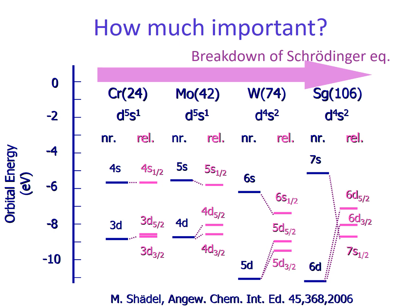Then how much important the relativistic effect in chemistry? This picture is an example showing the energy of d and s orbital of group six elements: chromium, molybdenum, tungsten, and seaborgium. In the case of chromium, the non-relativistic and relativistic results are similar, but if it goes to heavier, two results become different. And in the case of seaborgium, 7s and 6d levels are interchanged. So you can see the breakdown of the Schrödinger equation when the elements become heavier.